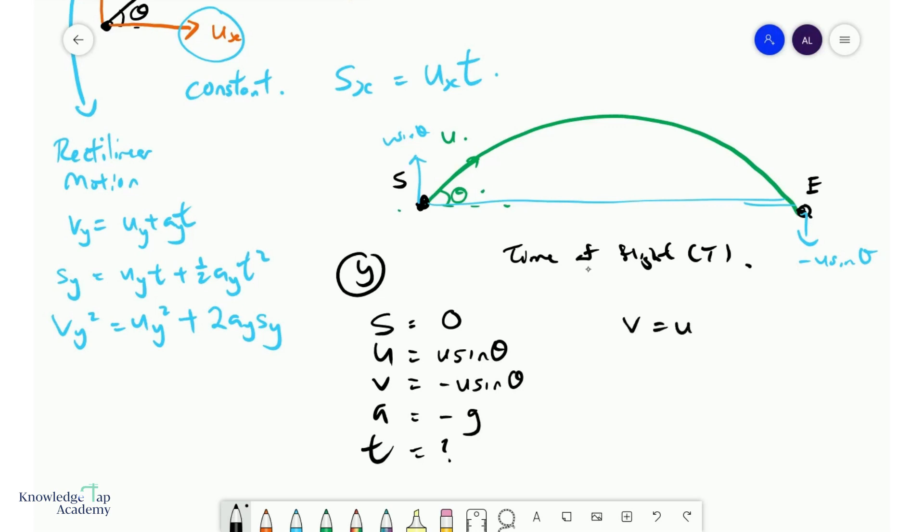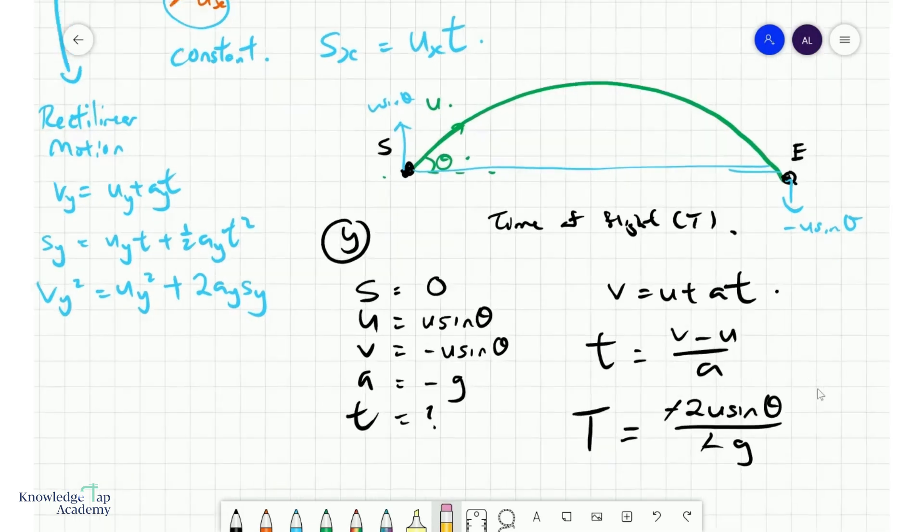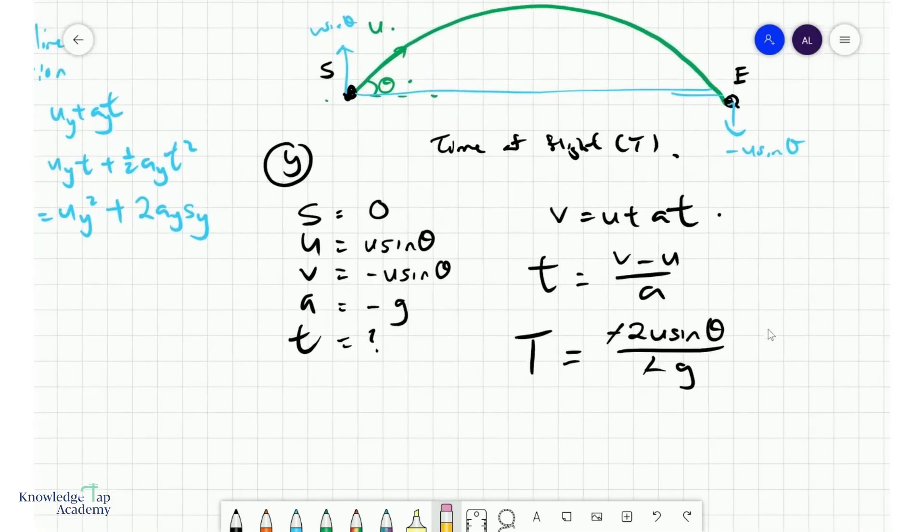So we can use v equals u plus at. And we can turn this around. So t equals v minus u over a, which gives us a nice little formula. So the time of flight is essentially minus 2u sine theta over minus g. And minus signs cancel. And so we have a very beautiful expression. T equals 2u sine theta over g.